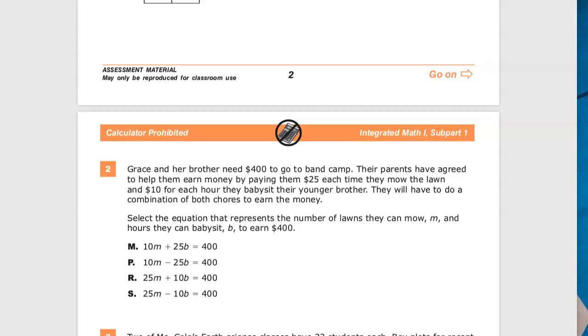Select the equation that represents the number of lawns they can mow, m, and hours they can babysit, b, to earn $400. The reason that you'd use an equation here is because you don't have to earn all your money doing one or the other. You simply have to have the total pot of money that you end up with, the total amount, be $400. That way they can go to camp.